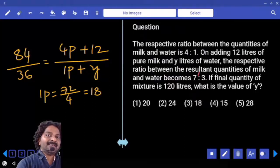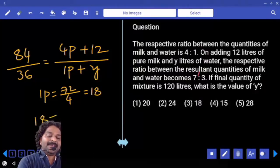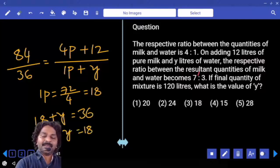Now the denominators are also equal, which is 1 part plus y must be equal to 36. 1 part value 18 plus y is equal to 36. Y is equal to 18.